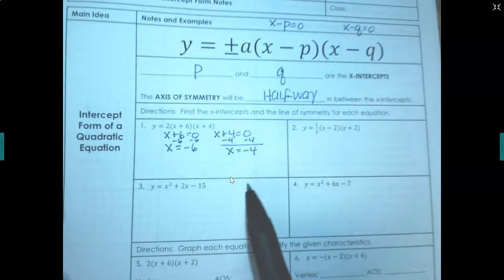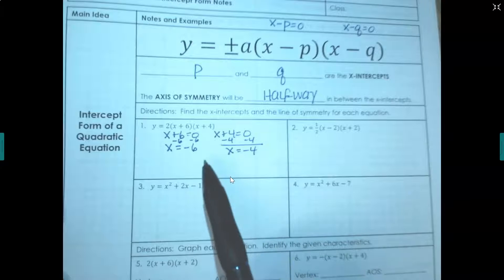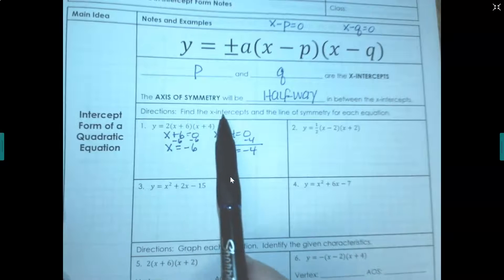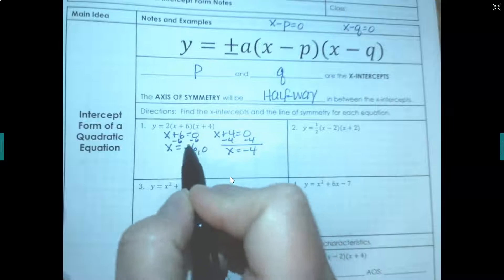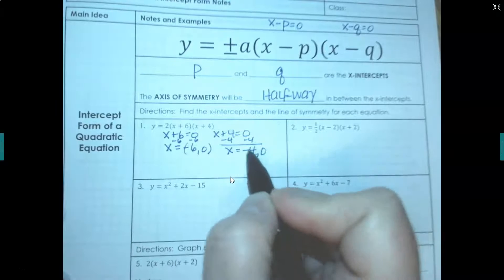And that will at least tell me what my axis of symmetry is because we want to find the x-intercepts right here. So this is really negative 6, 0, negative 4, 0.